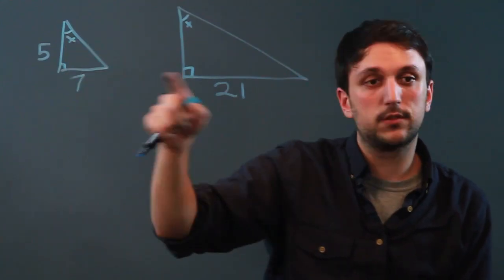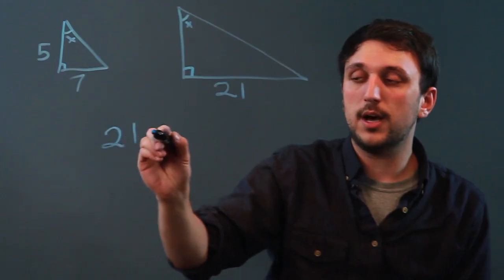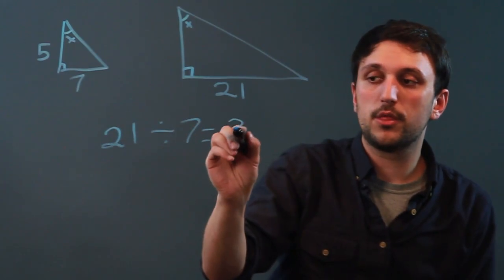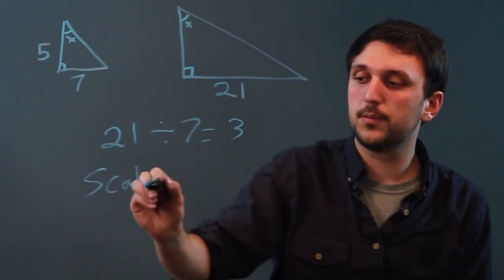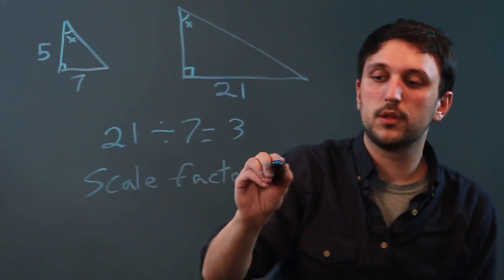then there is a scale factor. What we do is take the big length, 21, and divide it by the small length, 7, and that equals 3. So the scale factor equals 3.